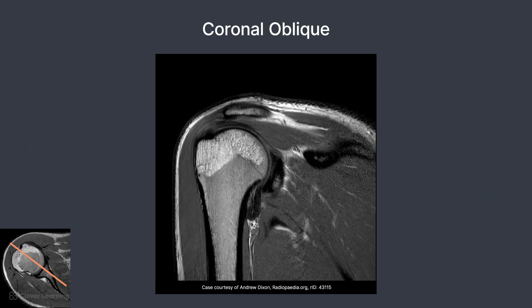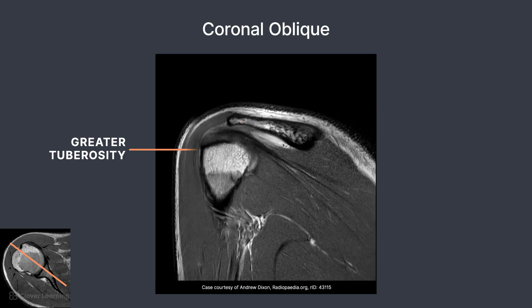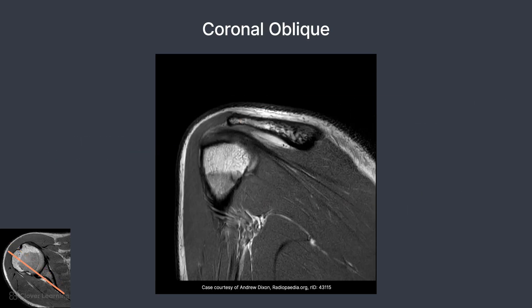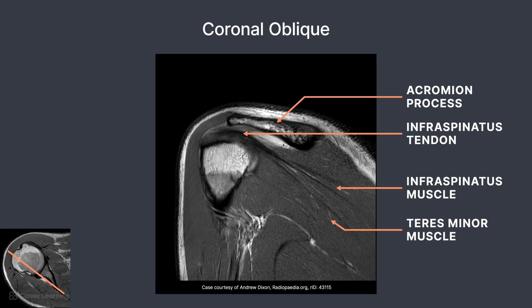At midline, we have a better view of the supraspinatus tendon. We can also see the greater tuberosity of the humerus in profile. The teardrop shape located inferior to the joint space is the axillary recess. Moving posteriorly, the angle of the acromion is visible on the superior aspect of the shoulder. The infraspinatus tendon can be seen moving from the infraspinatus muscle to insert on the humeral head. This view also demonstrates the teres minor muscle, below the infraspinatus muscle.